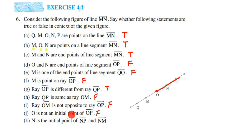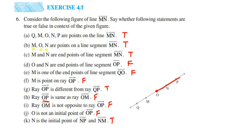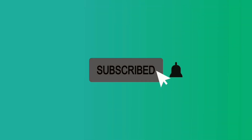The last statement is: N is the initial point of rays NP and NM. Yes, both NP and NM start with N as the starting or initial point. So this is a true statement. I hope this question is clear. In case you have any doubt, you can drop a comment. Thank you so much for watching.